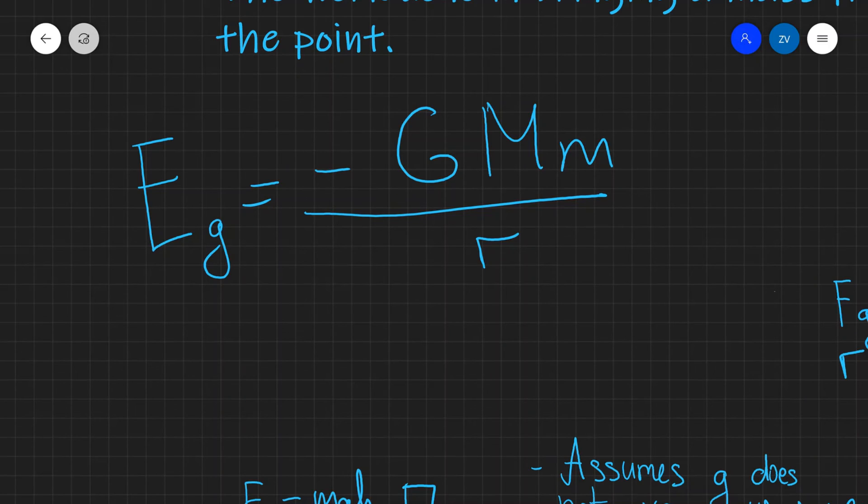If you are taking the OCR exam board, it is given in your formula booklet as the following. It just simply says energy, like so, is equal to minus GMm over r.